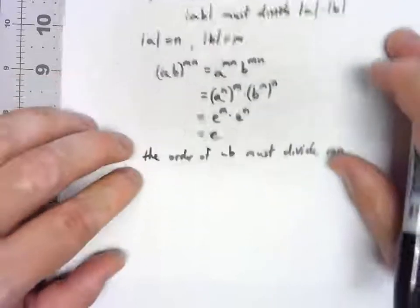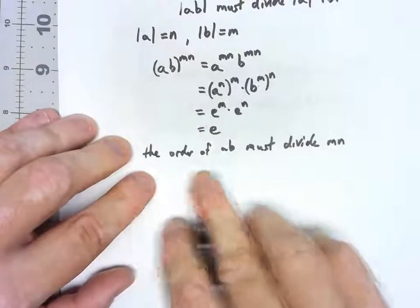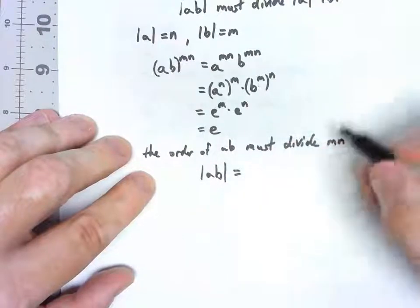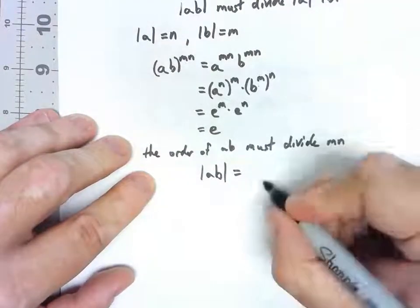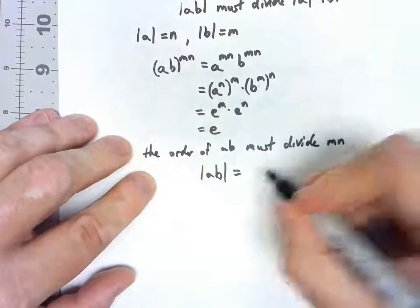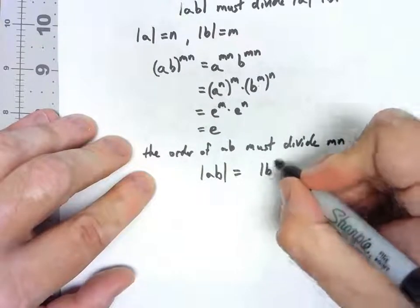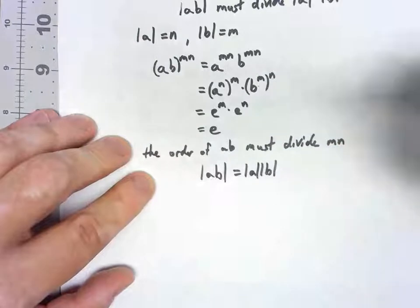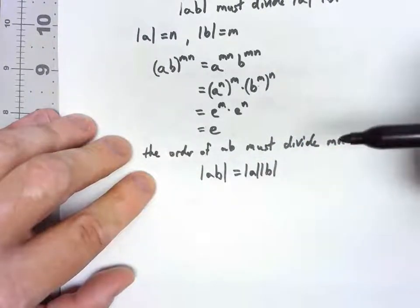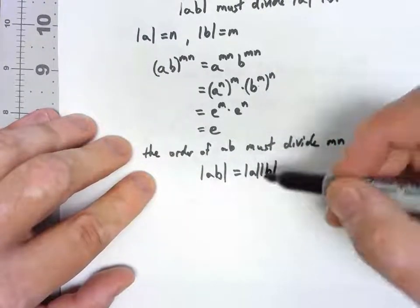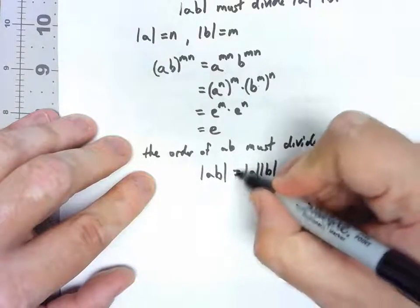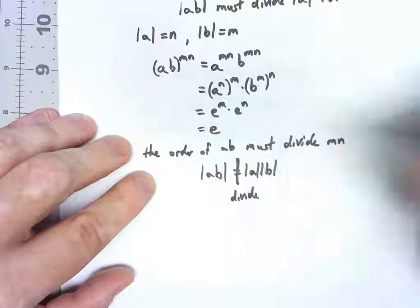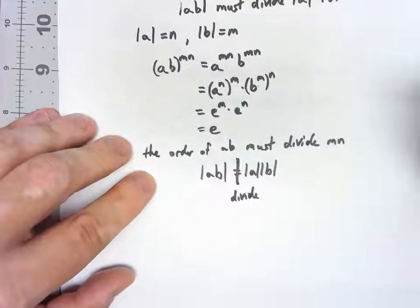Since AB to the mn equals E, by what we said before, that must mean the order of AB divides mn — that power we raised it to. But that's exactly what we wanted to prove. M was the order of B, N was the order of A. So the order of AB must divide the order of A times the order of B.